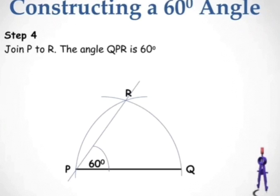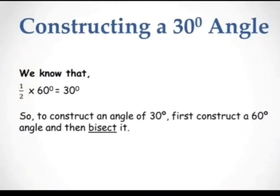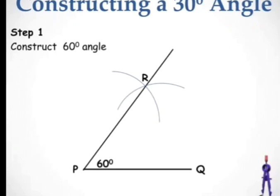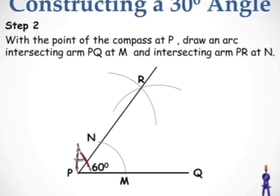Next, we construct a 30 degree angle. We know that 1/2 × 60 degrees equals 30 degrees. So to construct an angle of 30 degrees, first construct a 60 degree angle and then bisect it. With the point of the compass at P, draw an arc intersecting arm PQ at M and intersecting arm PR at N.